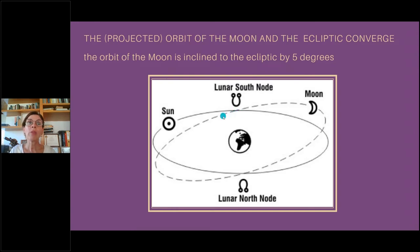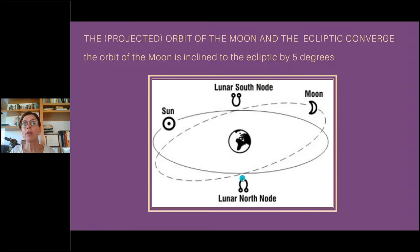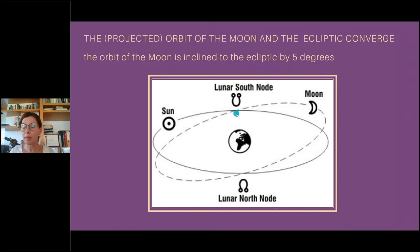And when the moon is going from south of the ecliptic to north of the ecliptic, this is the point of the north lunar node. What happens here is that when the moon is at this point near the nodes, the moon has the same latitude as the sun.